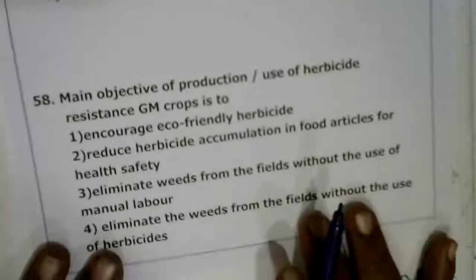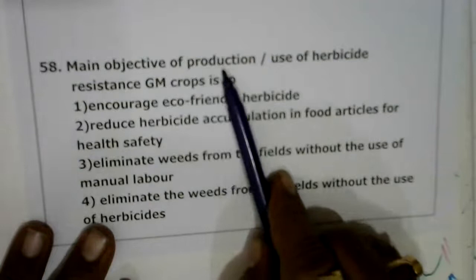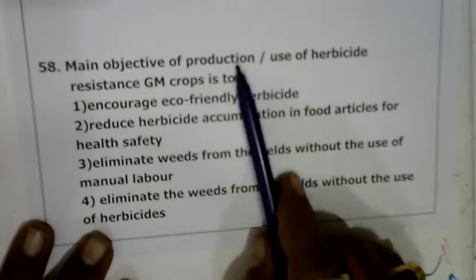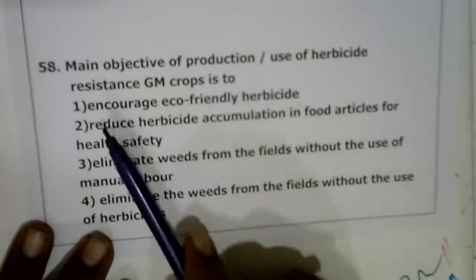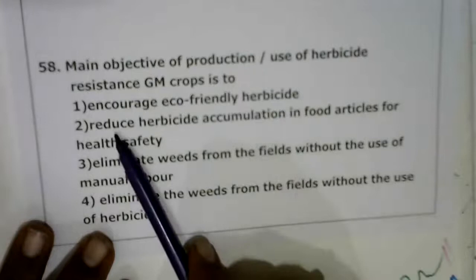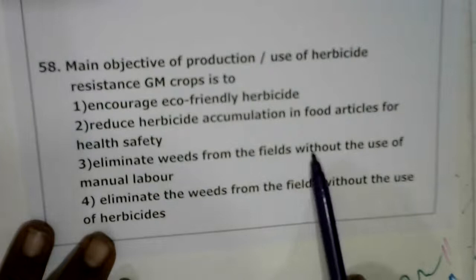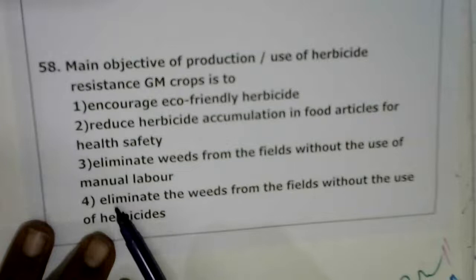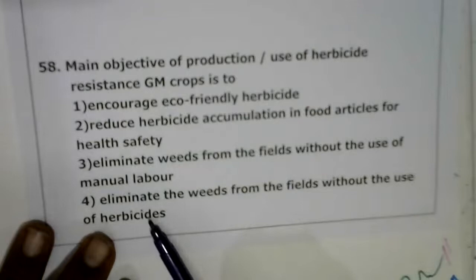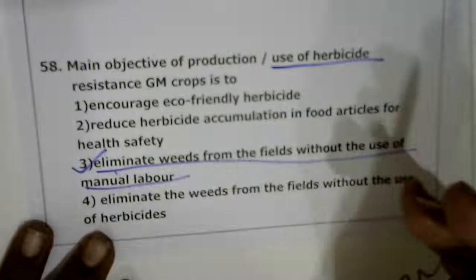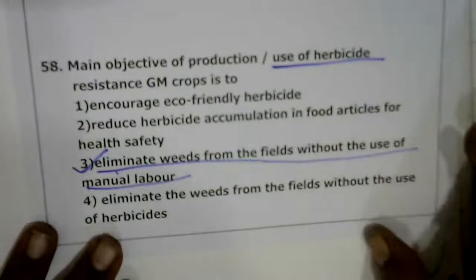Next: the main objective of producing or using herbicide-resistant genetically modified crops is to eliminate weeds from the field without the use of manual labor, by applying herbicide that kills weeds while the GM crop remains unaffected.